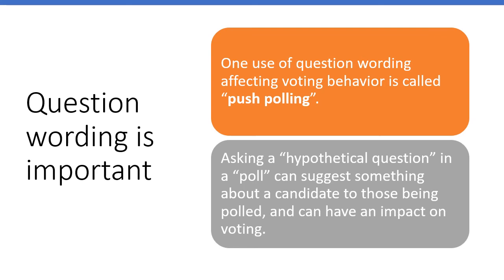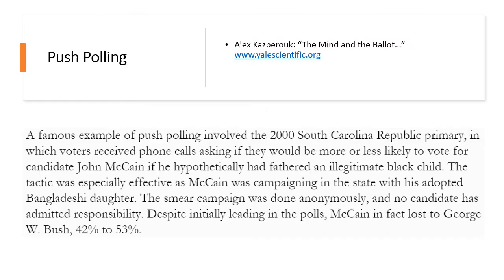Question wording affecting voting behavior is a real thing called push polling. Reputable public research firms don't do this — it's a no-no. But it is something that sometimes gets done by political pollsters, what they call internal polls, working for a particular candidate or party. The way this works is they ask a large number of people a hypothetical question in a quote-unquote poll — not to publish a result, but to suggest something about a candidate to those being polled, which can actually have an impact on voting.